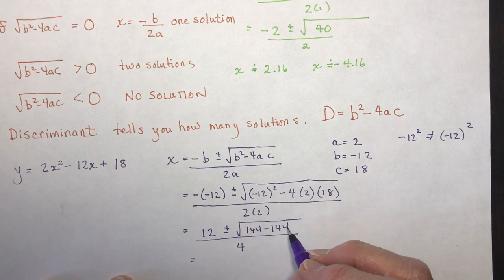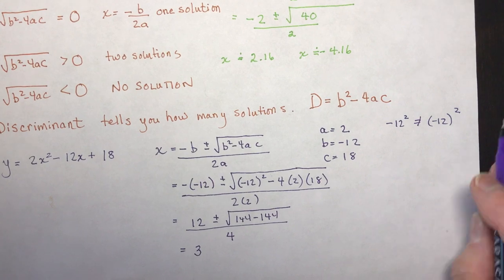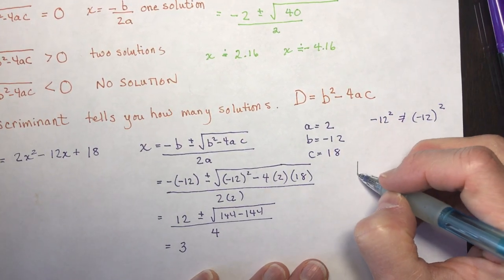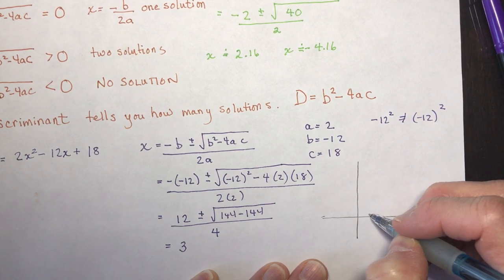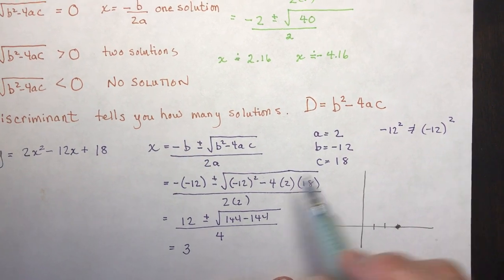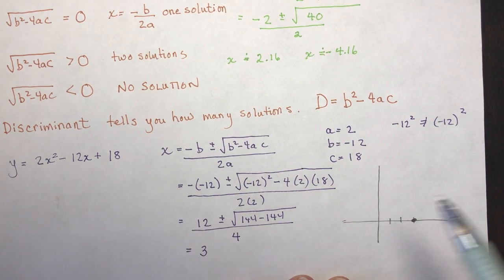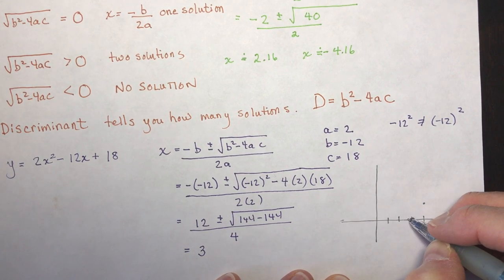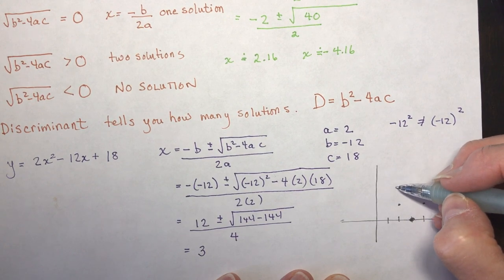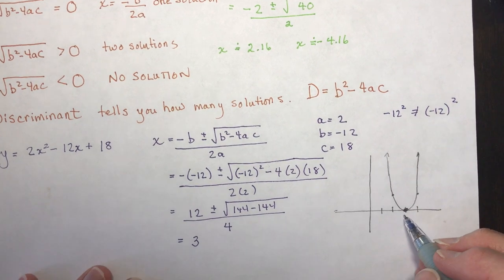The discriminant is zero, so I get x equals 3 — that is one solution. If I were to sketch this function, at x equals 3 it has one x-intercept. The function is concave up because the a value is 2. Going over 1, I go up 2. So it just touches the x-axis at one point. One solution means the parabola just touches the x-axis at one point. Always a good idea to label your axes.